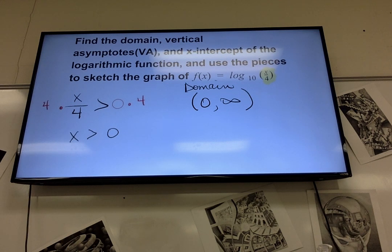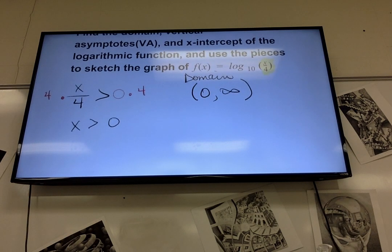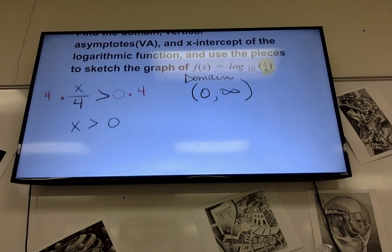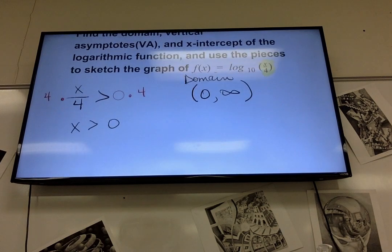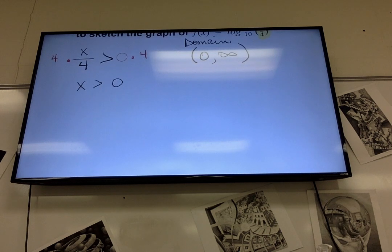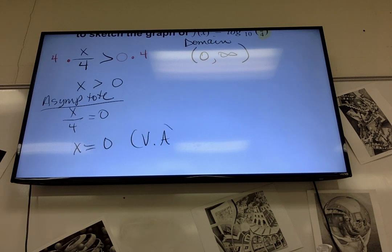Next, vertical asymptotes. Basically it's the same thing, only it's when that yellow highlighted area, the x over 4, equals zero. Because that's where your asymptote occurs. So again, you multiply both sides by 4. Remember, x equals zero is your vertical asymptote.